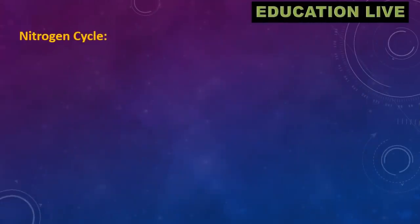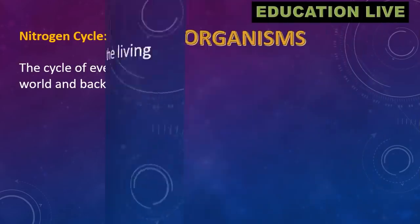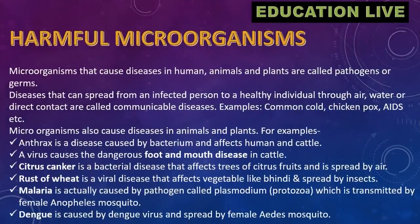Nitrogen cycle: the cycle of events by which nitrogen is channeled into the living world and back to the atmosphere is called the nitrogen cycle. Harmful microorganisms: microorganisms that cause diseases in humans, animals, and plants are called pathogens or germs.